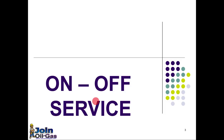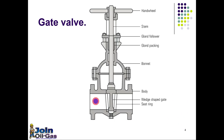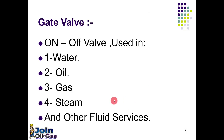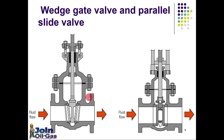On-off services — valves used for on or off service means they will be either fully open or fully closed. The type of valve used for this service mostly is the gate valve. Here you can see the picture of the gate valve showing its various parts. Gate valve is an on-off valve used on various services like water, oil, gas or steam, and other fuel services. This is the most commonly used valve in the oil and gas industry.